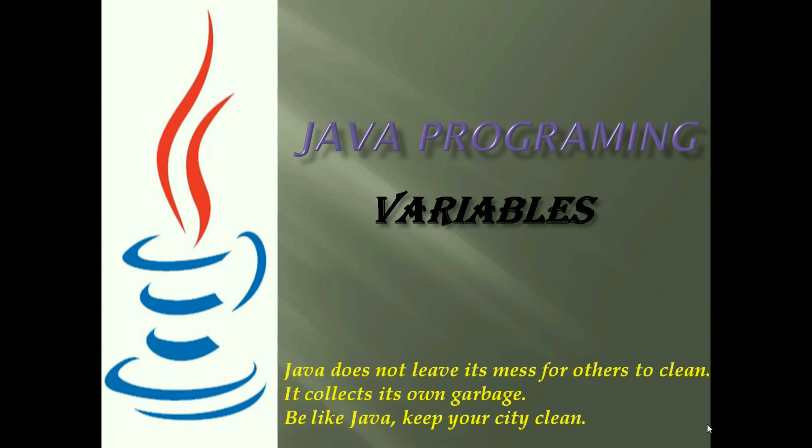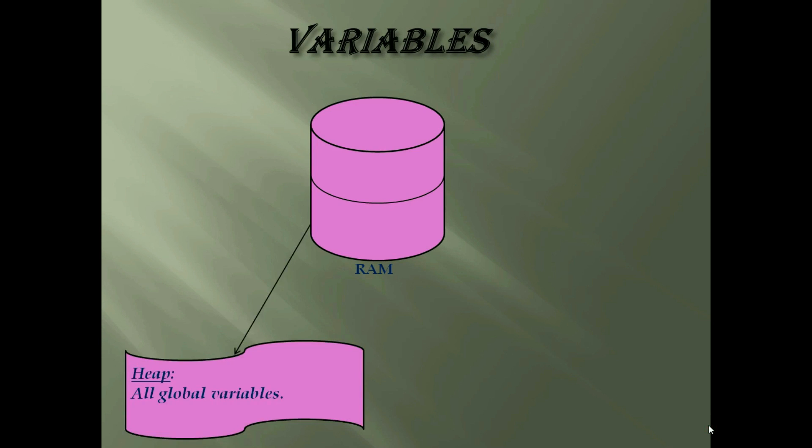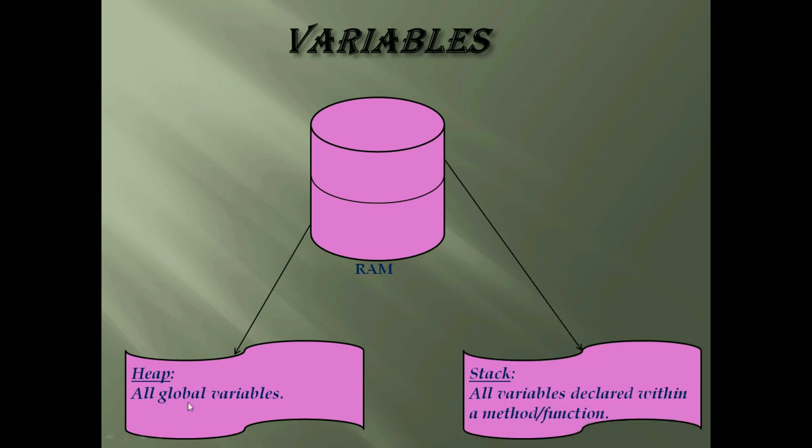As we know that variables are usually stored in RAM, Random Access Memory. So it will store either on the heap memory or on the stack memory. All global variables will usually store in the heap memory, and all variables declared within a method or function are usually stored in the stack. Stack and heap are both RAM, just different locations.